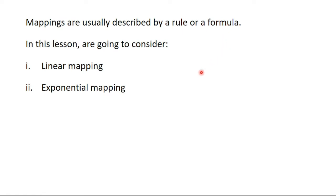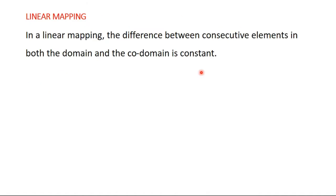In this lesson, we are going to consider two types of mapping: the linear mapping and the exponential mapping. When you have these mappings, we are going to see how to find the statement that is linking them, or how to find the rule or the formula that is linking the members of each set. Let's begin with linear mapping.